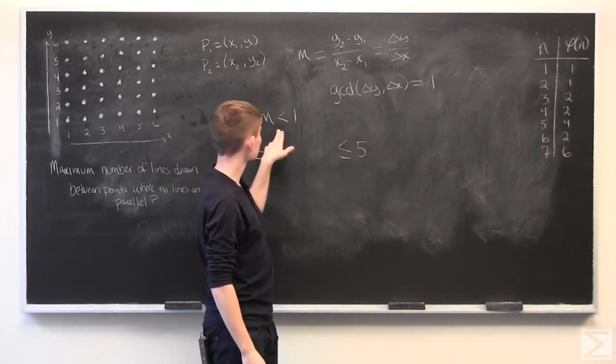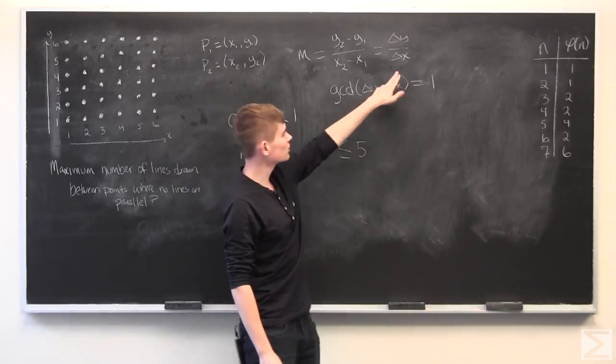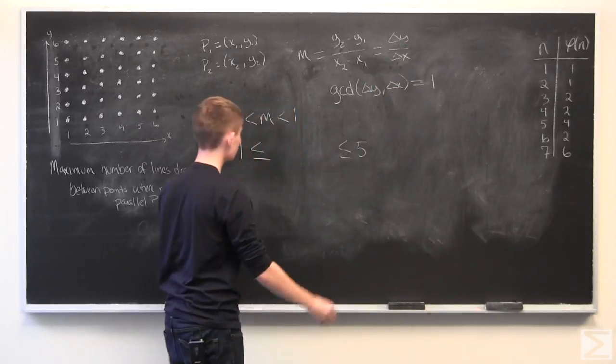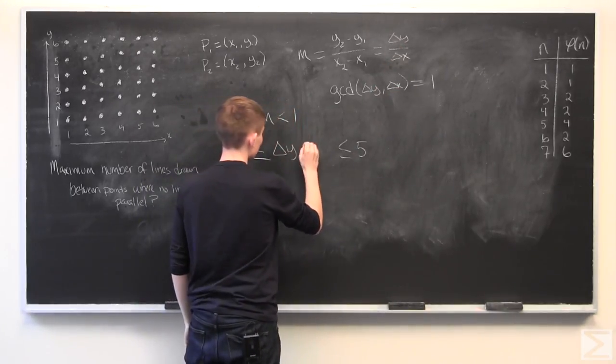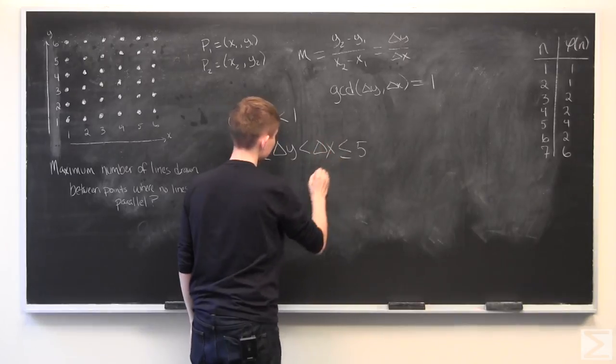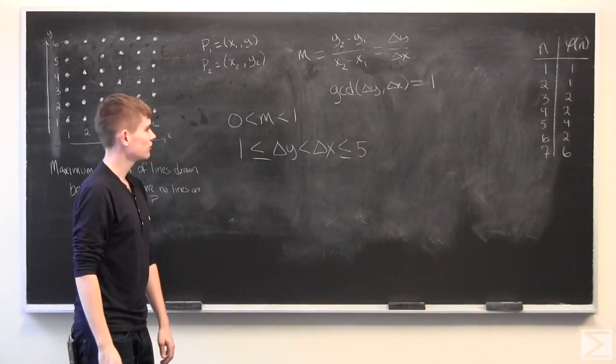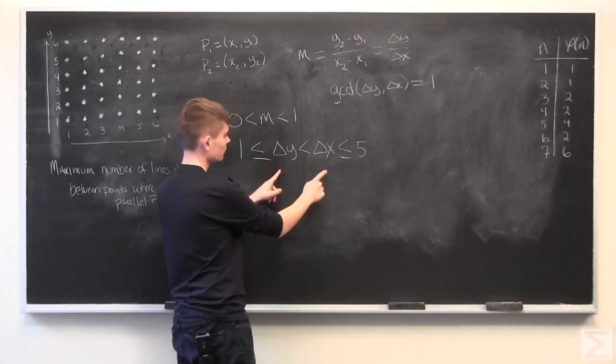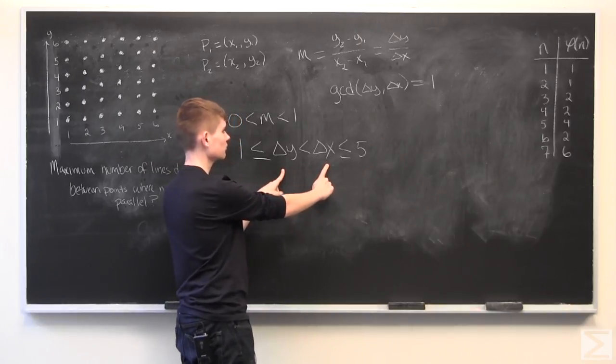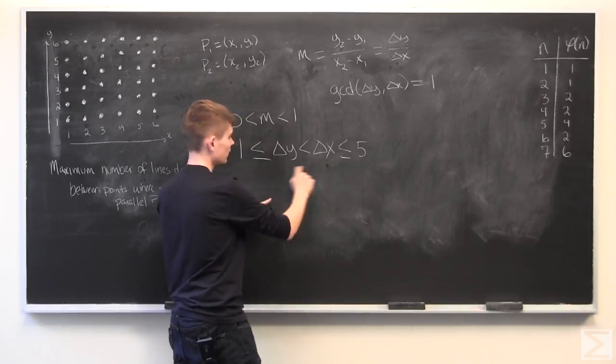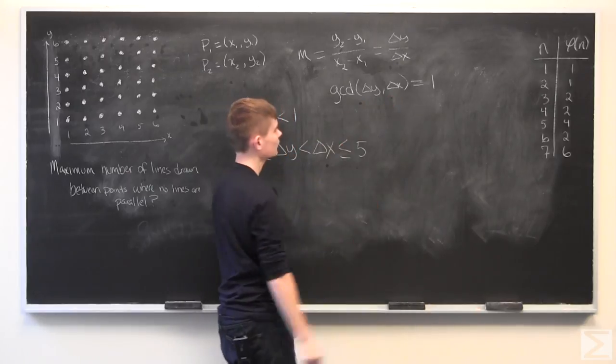And since we want the slope to be less than 1, we want delta x to be greater than delta y. And so, we get this. And what we have to do is start finding pairs of delta x and delta y that satisfy this and also satisfy this.